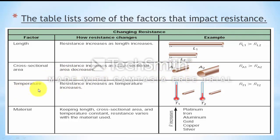Resistance also depends on temperature. With increasing temperature, the motion of charged particles increases and they collide more vigorously, decreasing their velocity. Hence the rate of current decreases and resistance increases. Resistance also depends on material: silver has the minimum resistance, copper has the second minimum, and resistance increases as we go up the chart.